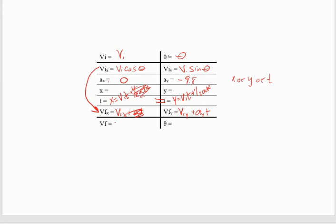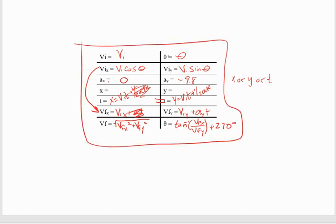To put these back together, we do the Pythagorean theorem: VFX squared plus VFY squared. Then remember we do the inverse tangent of VFX over VFY and add that to 270 to find our degrees. If you fill this in on the front of your foldable, this gives you a cheat on how to solve all these 2D problems based off the kinematic variables.